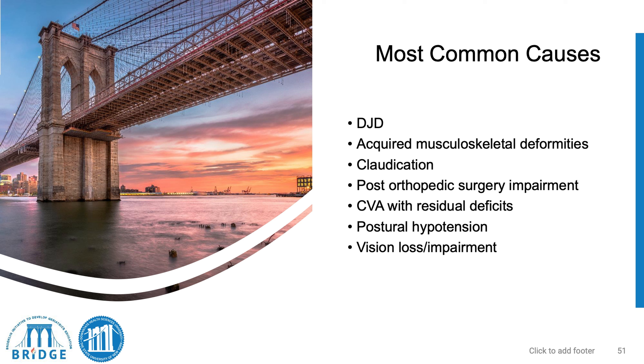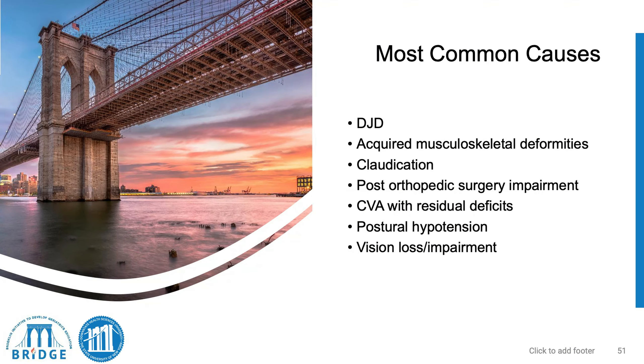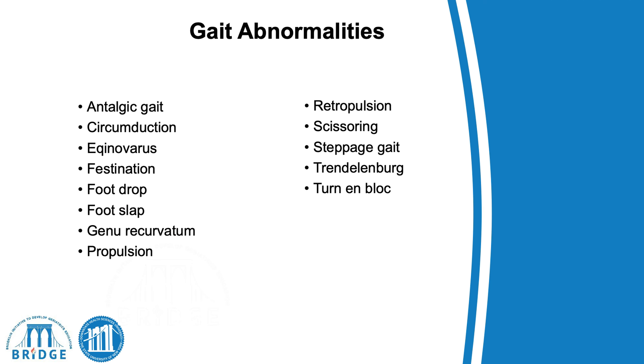Some of the most common causes of abnormal gait include degenerative joint diseases such as osteoarthritis, acquired musculoskeletal deformities, claudication, post-orthopedic surgery with impairment, cardiovascular or cerebrovascular disease with residual effects, postural hypotension, and visual impairment.